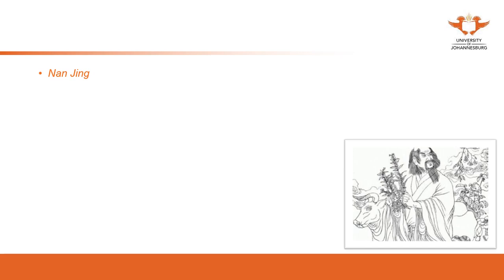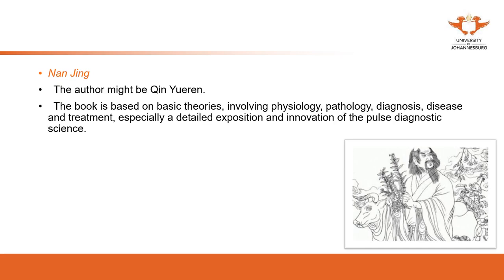The second classic is the Nanjing, another important classic that discusses the difficult questions raised by the Huangdi Neijing. In the Nanjing, the author further discusses specific topics from the Huangdi Neijing, with particular detail on pulse diagnosis.